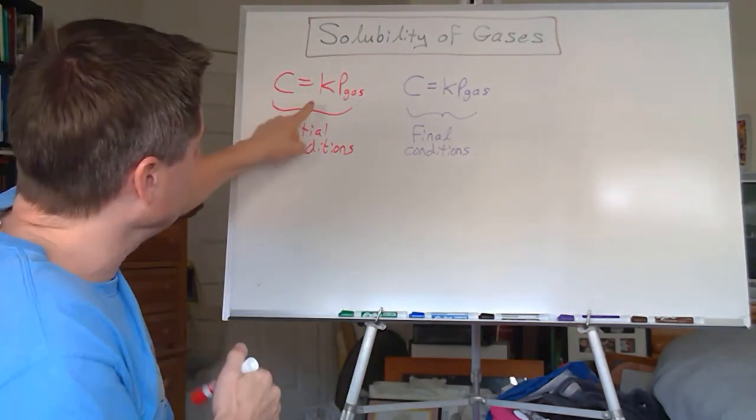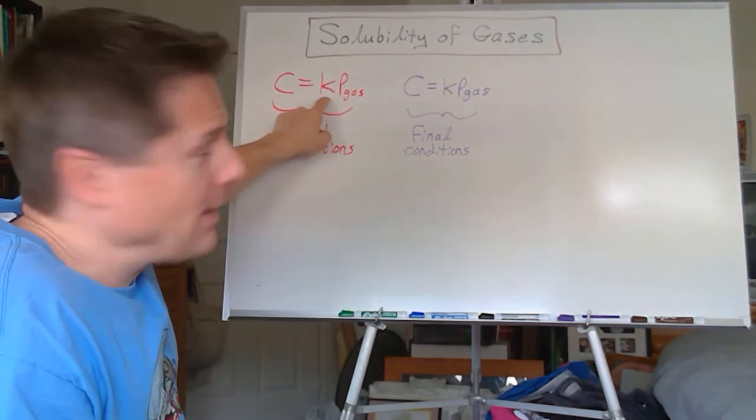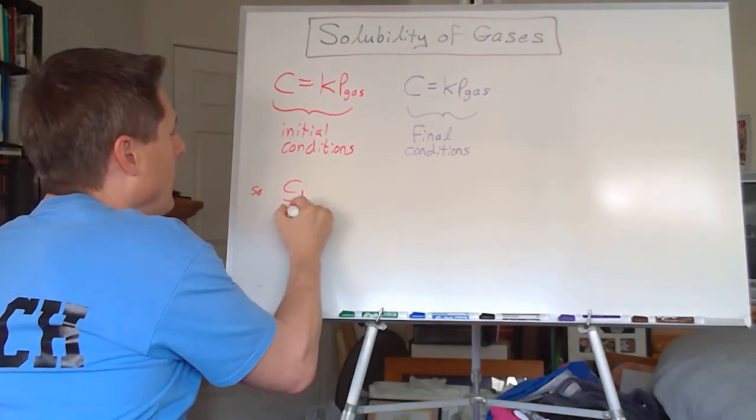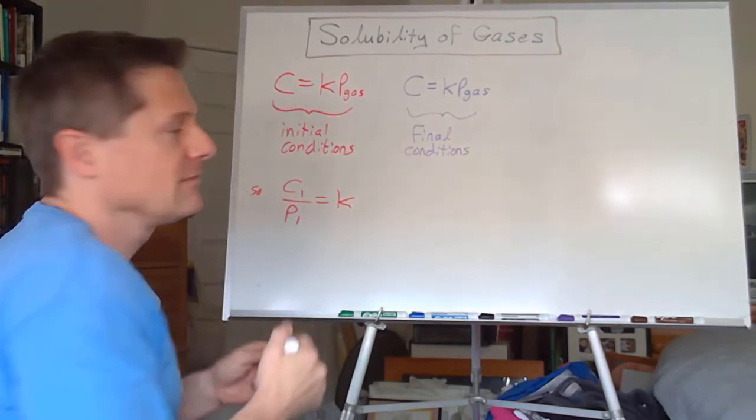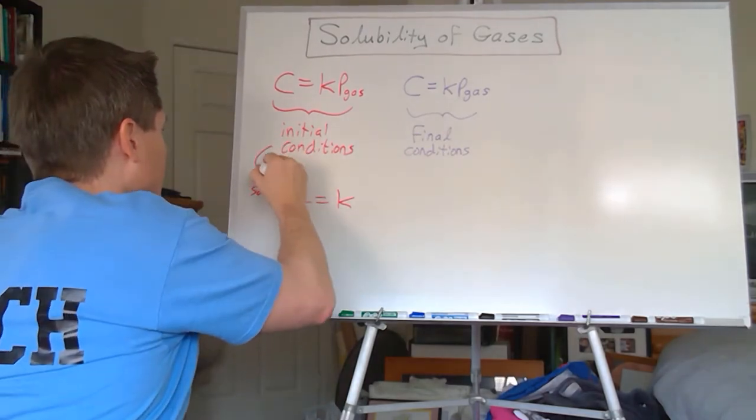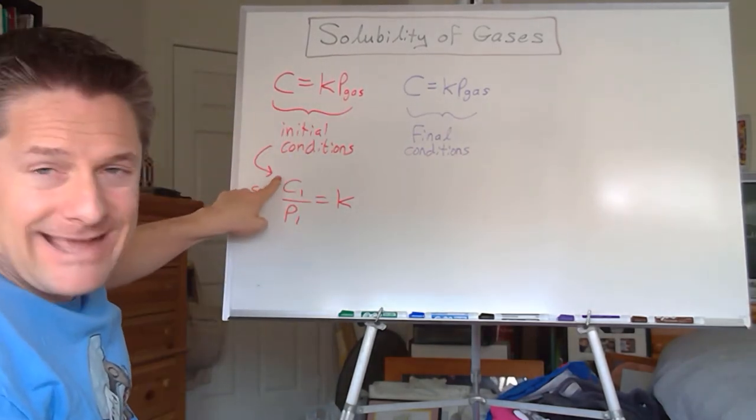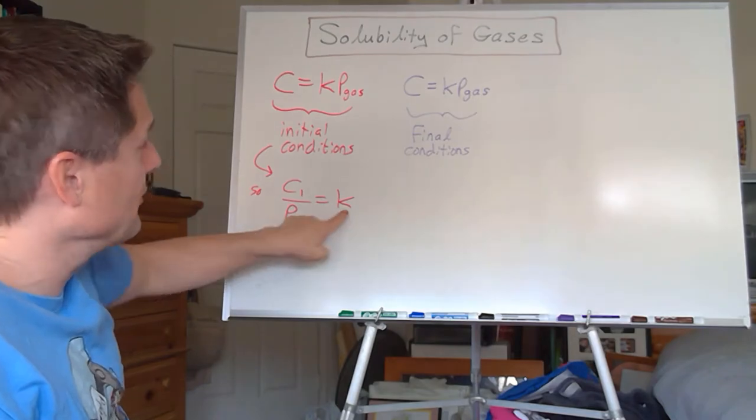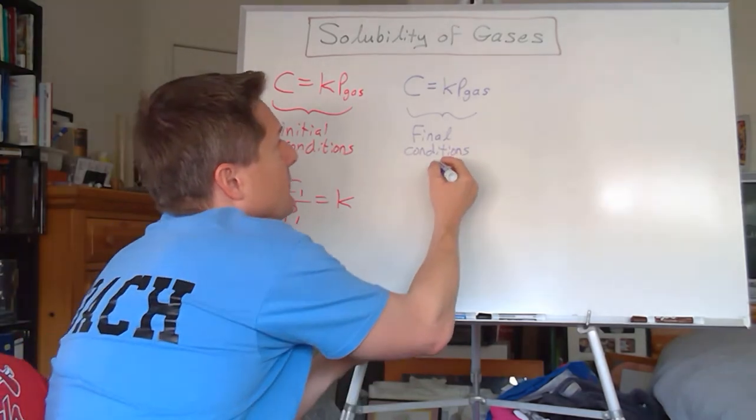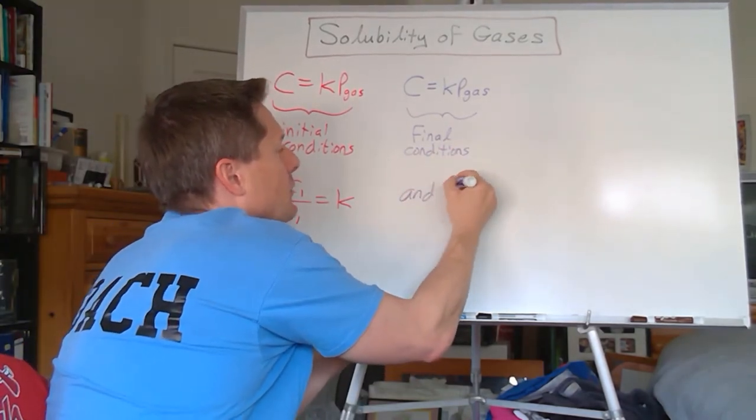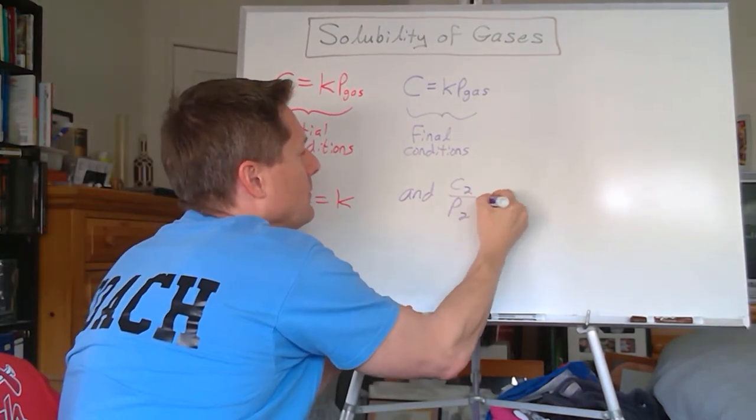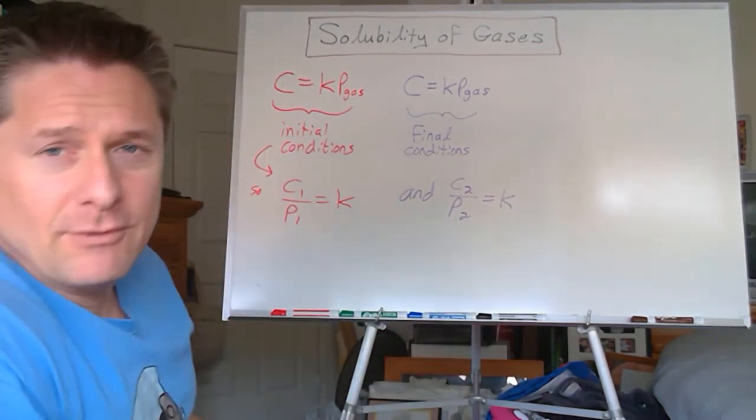So what I'm going to do is isolate the constant. So let's call it C1 over P1 equals K, right? So this would be initial conditions, C1, P1. So if I take the concentration divided by the partial pressure of the solution, that will equal Henry's law constant. Won't that also be true here? So C2, if that's the final conditions, over P2, will also equal K.